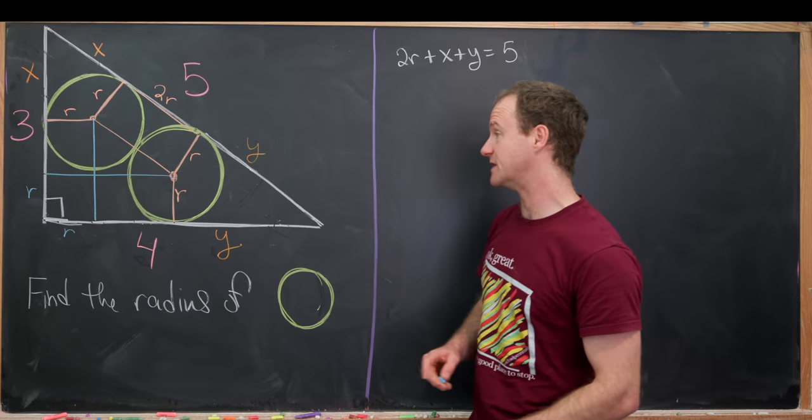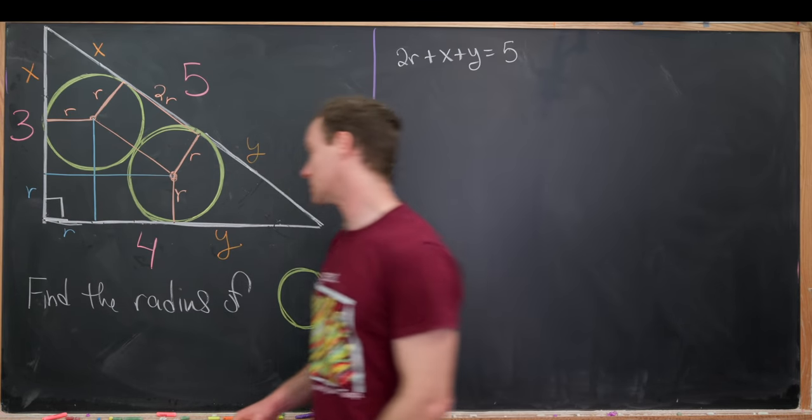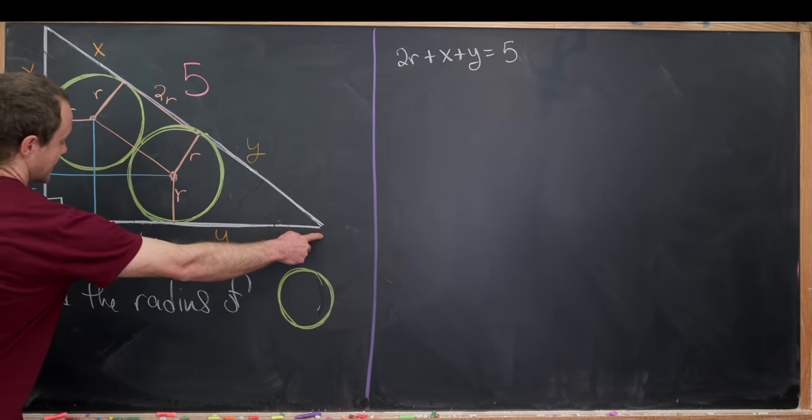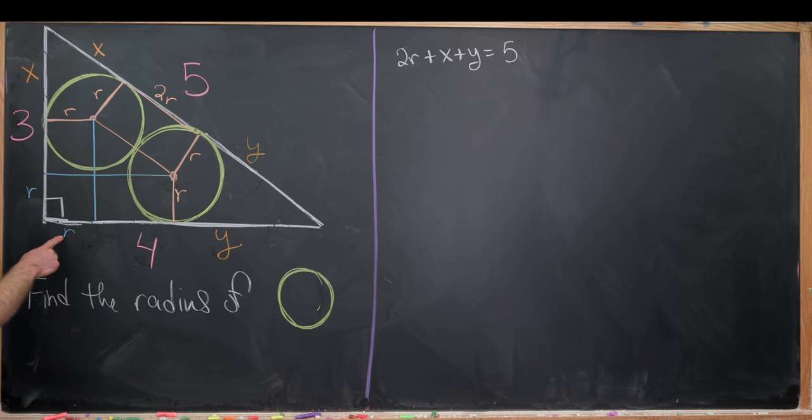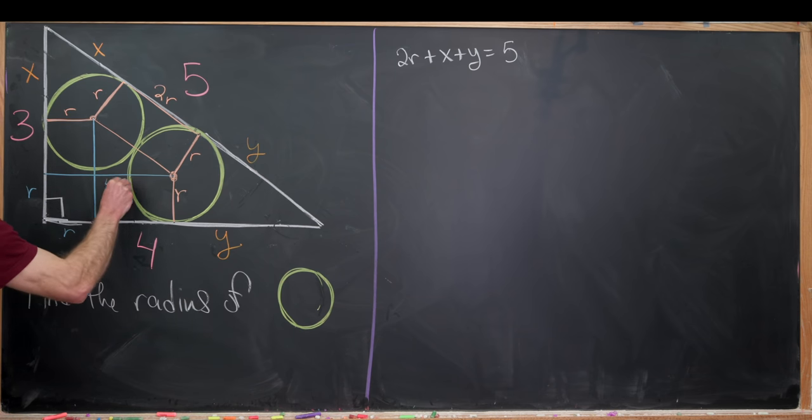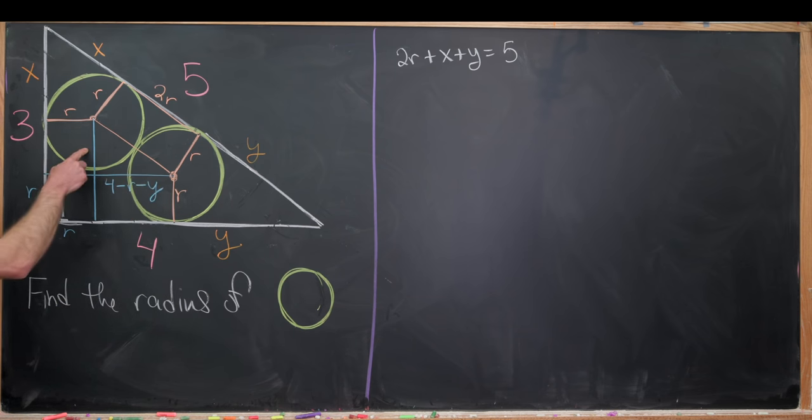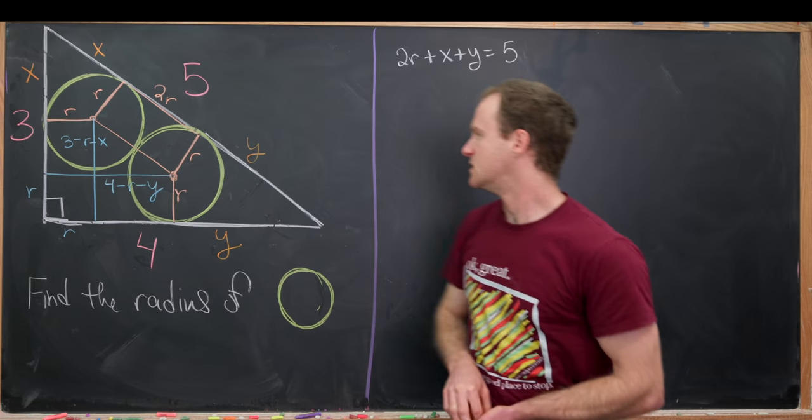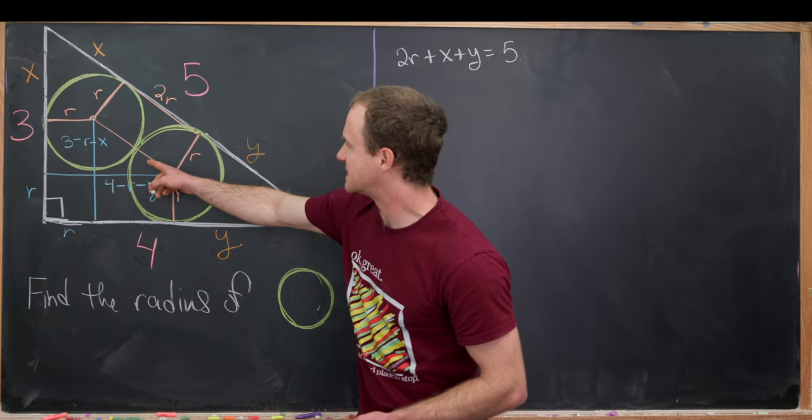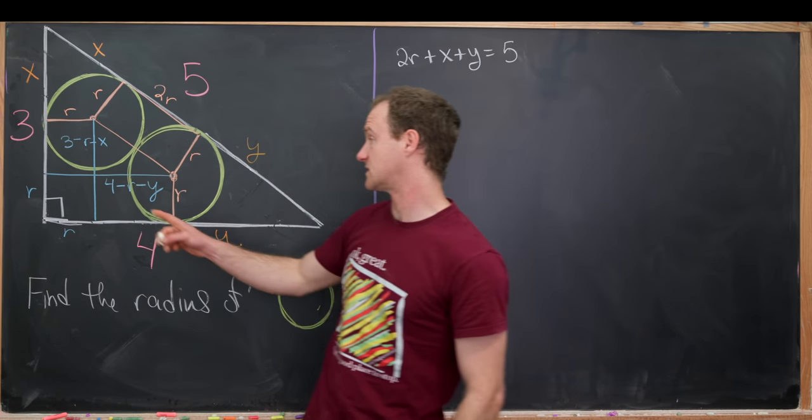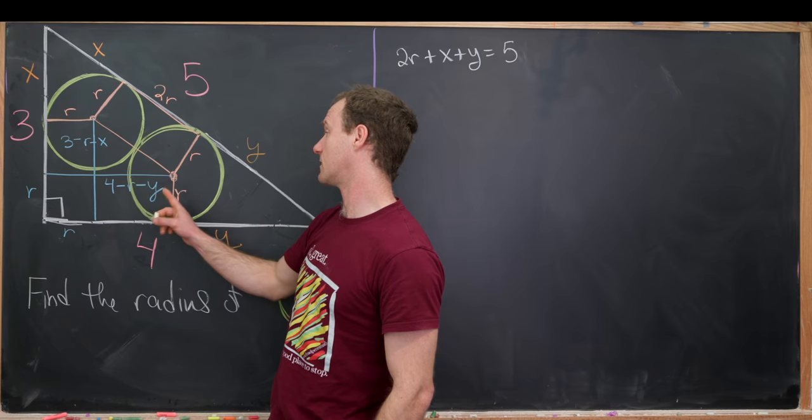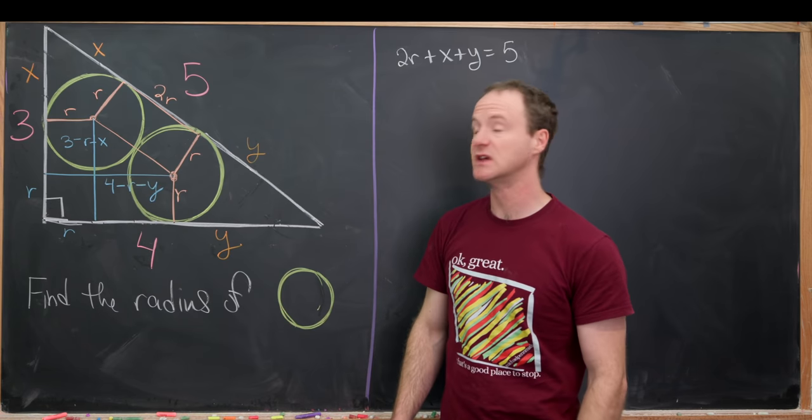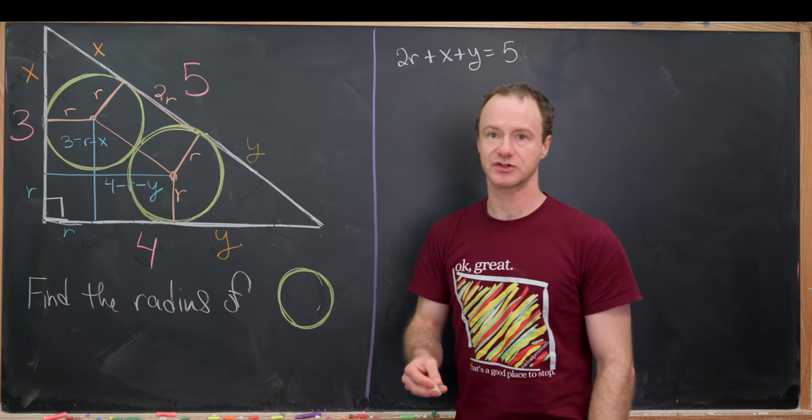And then from this information, we can write the side lengths of these two triangles. Notice this entire length right here is 4. But now if we subtract off r and y, we have this length right here. So this is 4 minus r minus y. And then similarly, this length right here will be 3 minus r minus x. Then now we've got this inner triangle has side length 3 minus r minus x, 4 minus r minus y, and hypotenuse equal to 2r just by our construction.